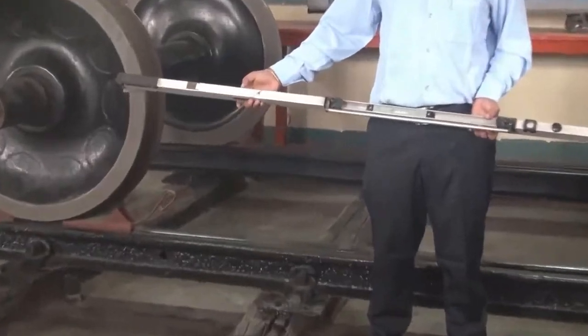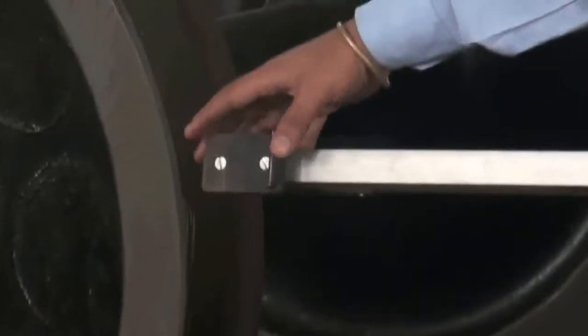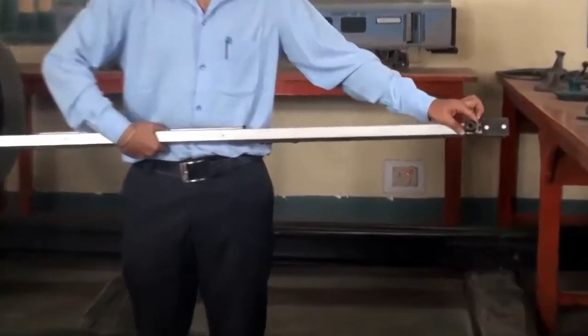This is a track measuring gauge. It has two ends: one fixed end and one movable end.